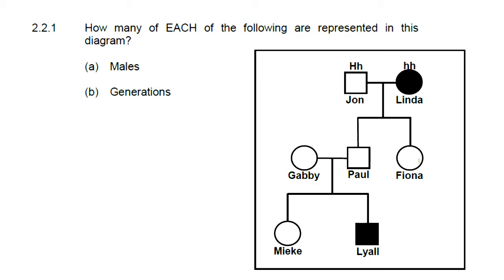Using a highlighter or a pen is a good idea here. So let's have a look at the males first. We've got Jon, we've got Paul and we've got Lyle which means the number of males will be three. And if we have a look at the number of generations, there's our first generation, here is our second generation and there's a third generation which means the number of generations will also be three.